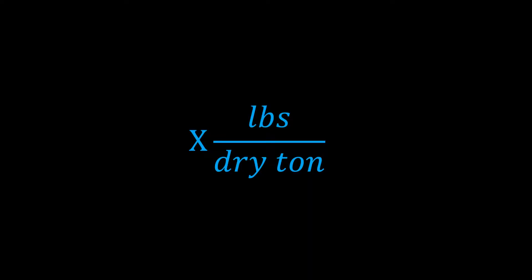Polymer usage is typically calculated as pounds per dry ton — the pounds of polymer added to the dry tons of sludge going into a thickening or dewatering system. And that's pretty straightforward, right? Well, it's wrong.